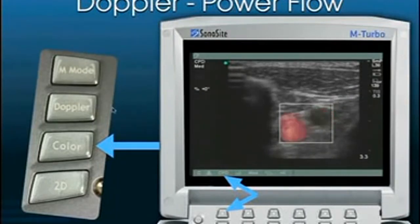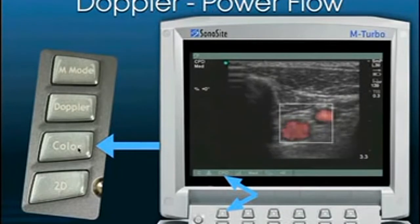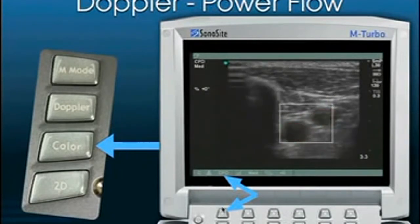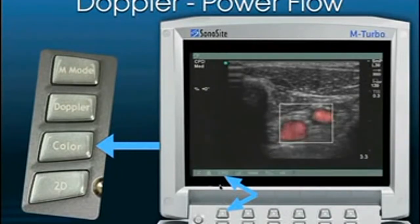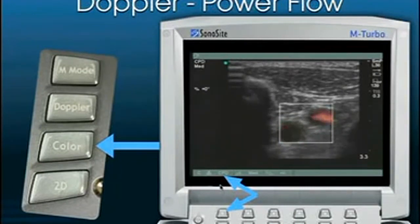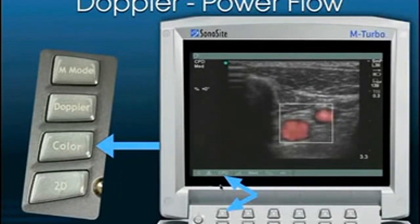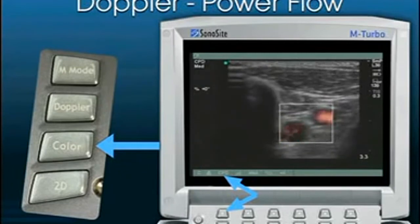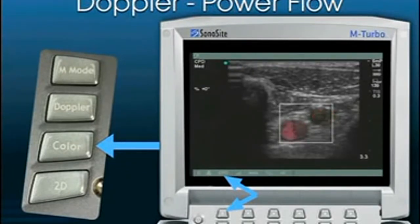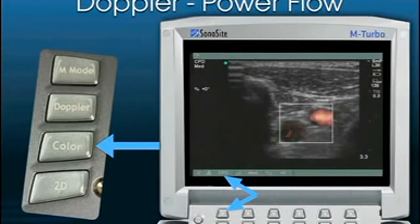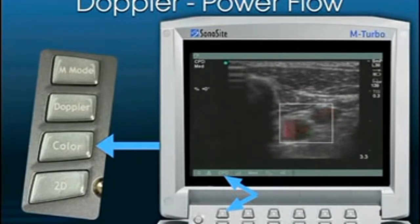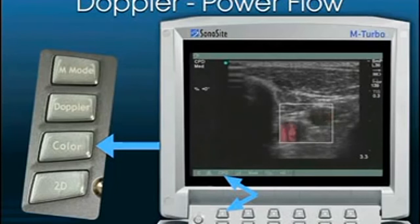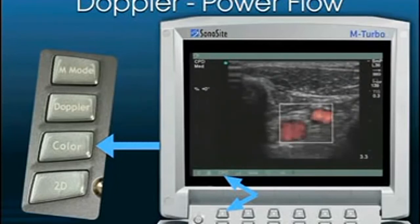The way you activate power Doppler is after depressing the color button, you then activate it by the soft key that corresponds to the power flow Doppler function. This is an orange-only type of flow — it's not directional. It's a very sensitive type of flow and is used for identifying perfusion in tissue that has a low perfusion state, such as the testicles.